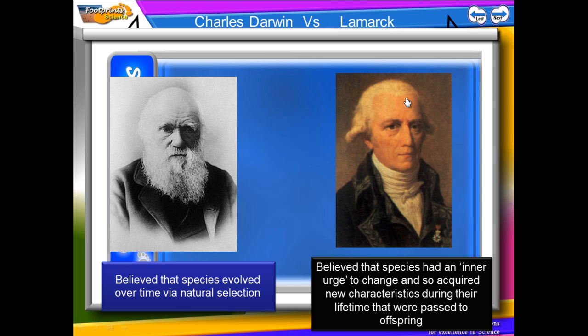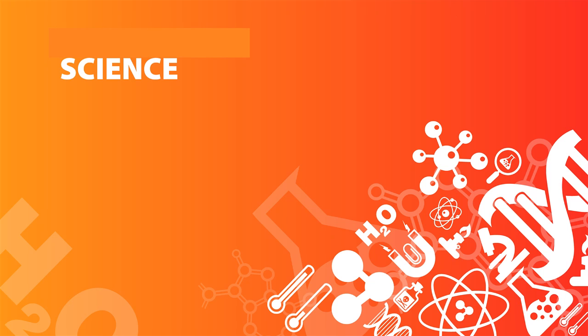That is how we establish whether we believe a theory or not. We look at the evidence, and if all of the evidence is backed up by the theory we continue to believe it. If a new piece of evidence comes along that discounts the theory, then we have to revise it and think of a new understanding.